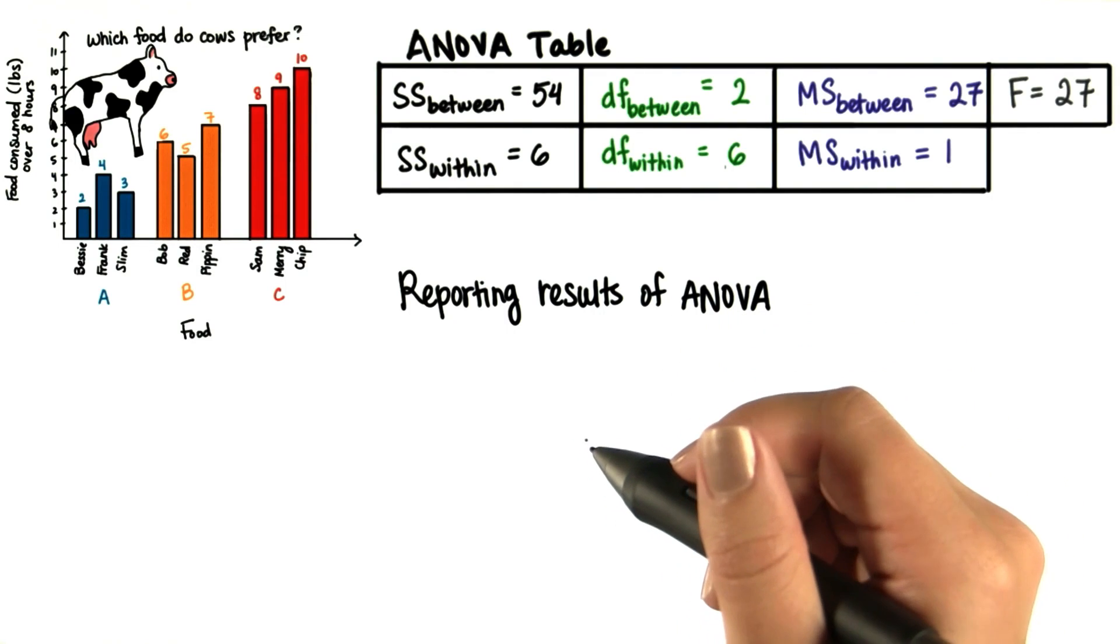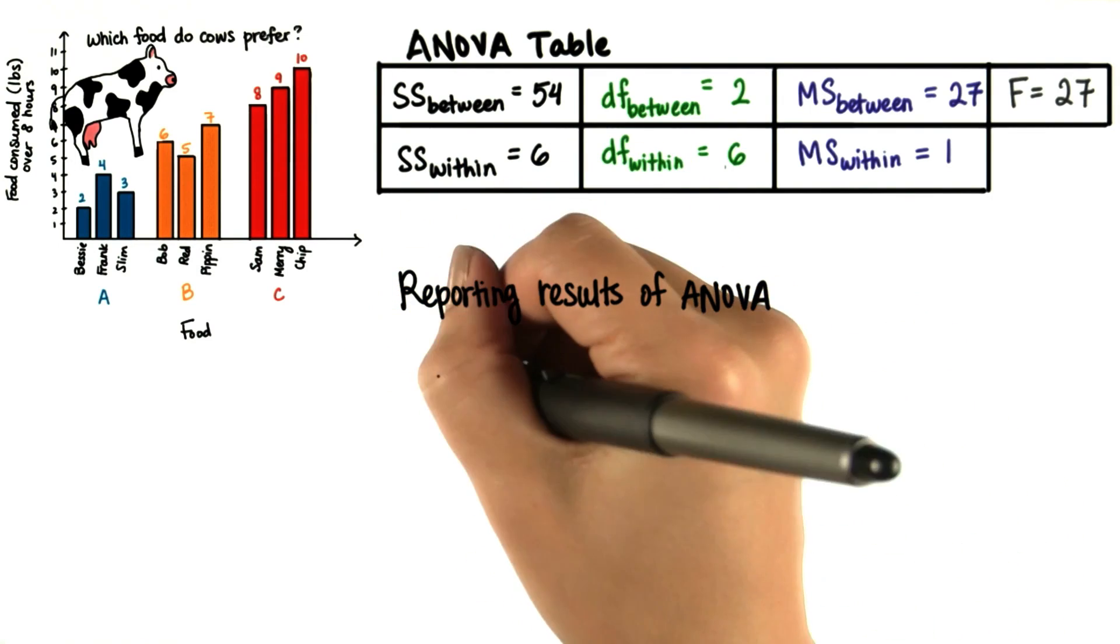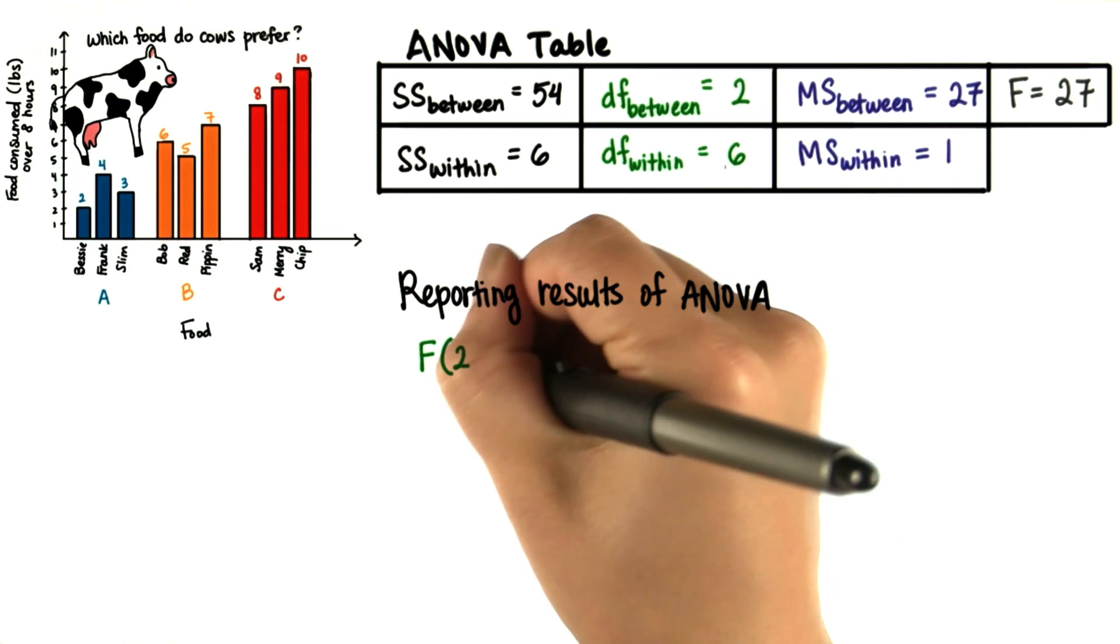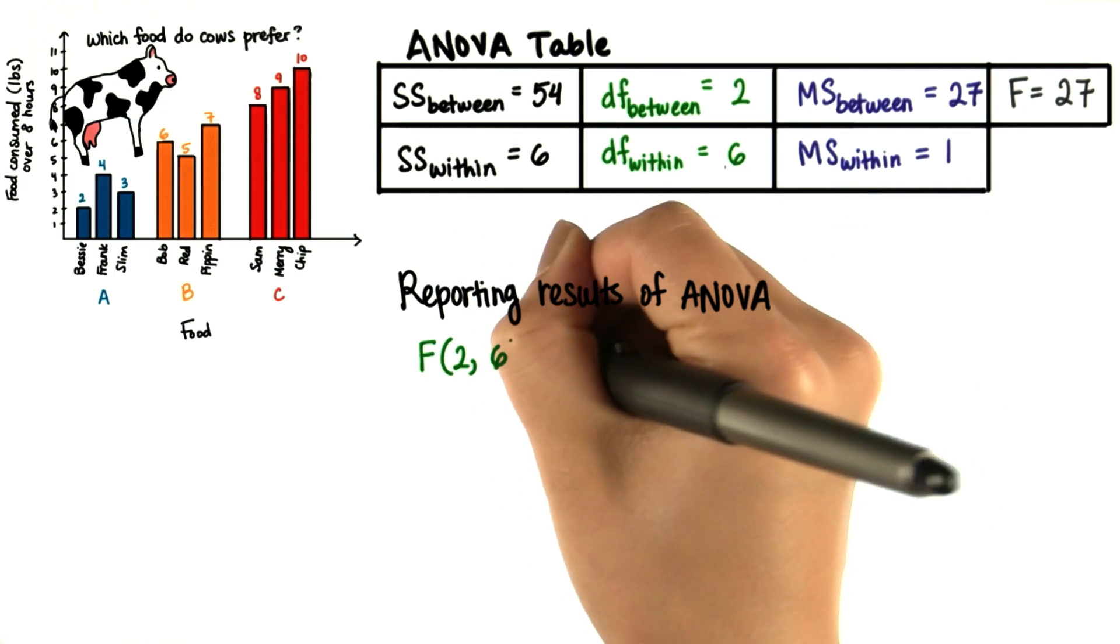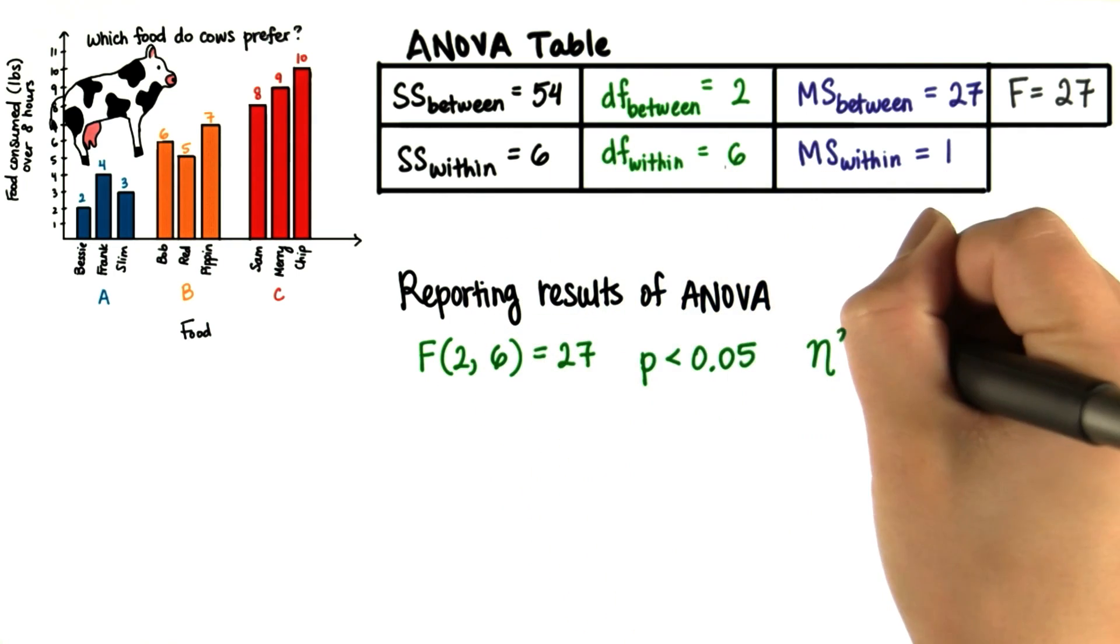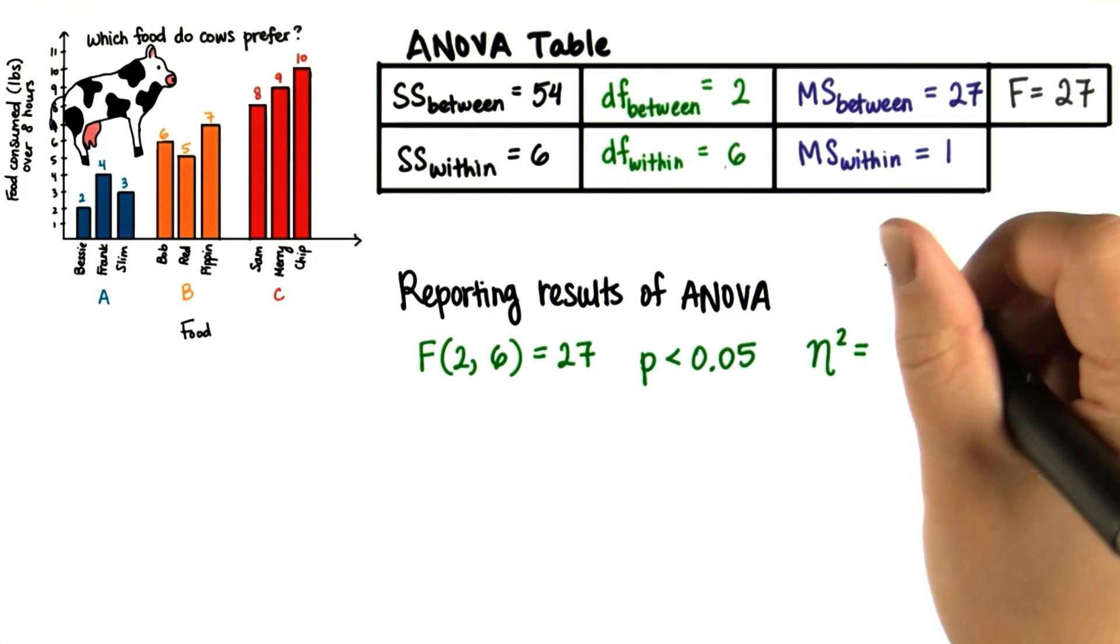We typically report the results of one-way ANOVA like this: our F statistic as a function of our two degrees of freedom, between and within, our p value, and eta squared.